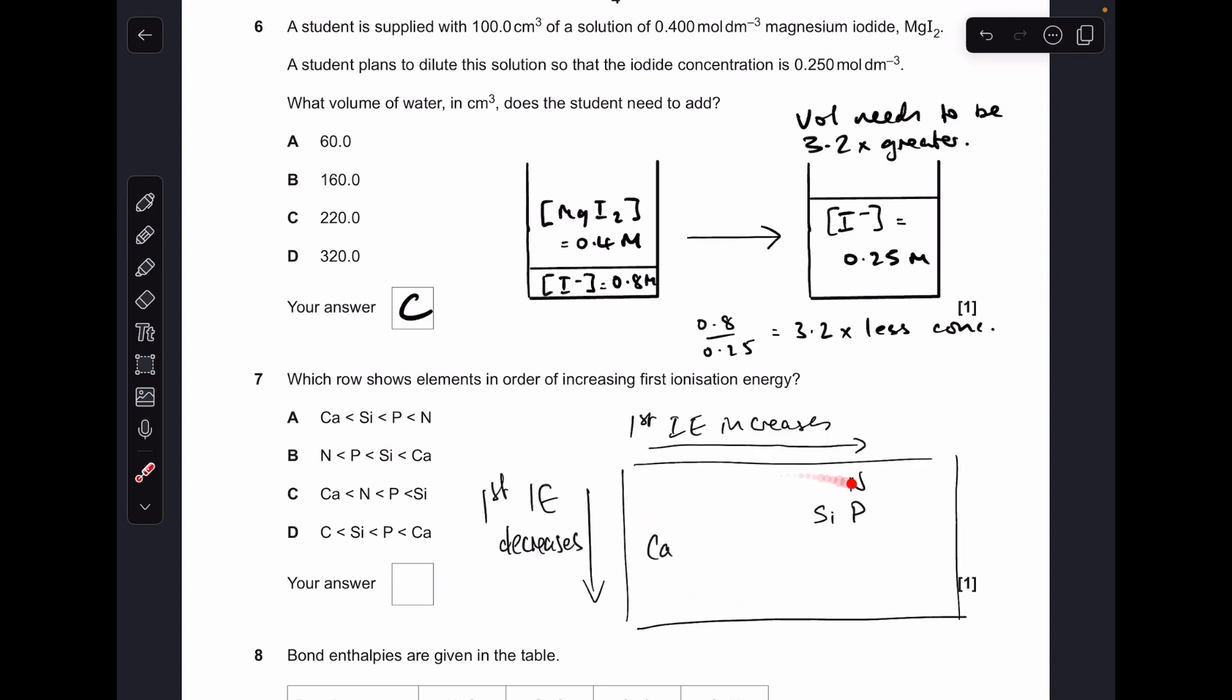Moving on to number seven. So I've just got a very crude outline of the periodic table there just to remind you of the general trends in first ionization energy. So down any group, first ionization energy decreases, and going across any period in general, first ionization energy increases. So you can see I've also mapped out where these elements are. So the lowest first ionization energy is going to be calcium and the highest will be nitrogen. So we're looking for where they are in these trends, and you can see straight away in option A, calcium is the lowest, nitrogen is the highest. So it was option A.